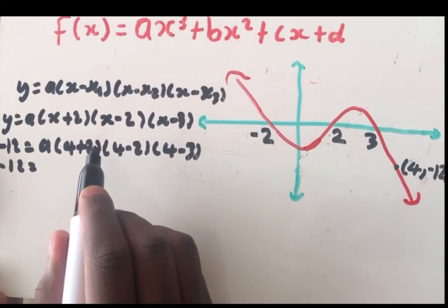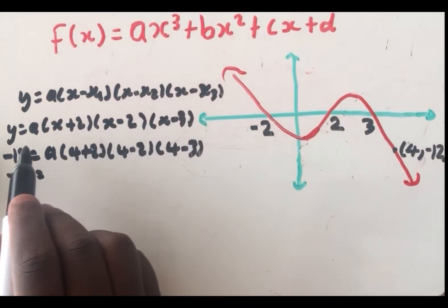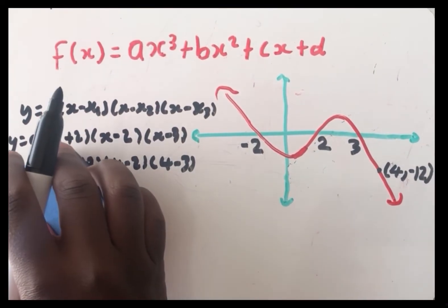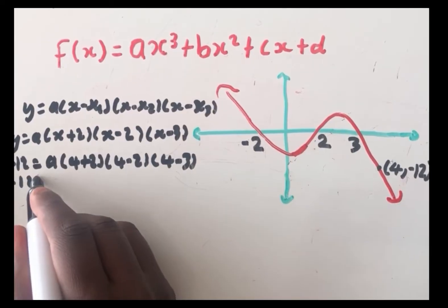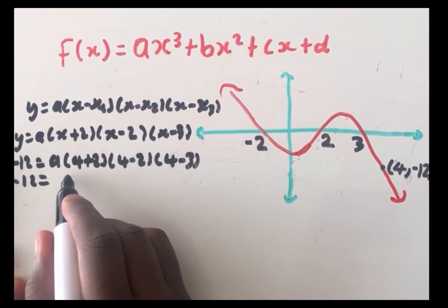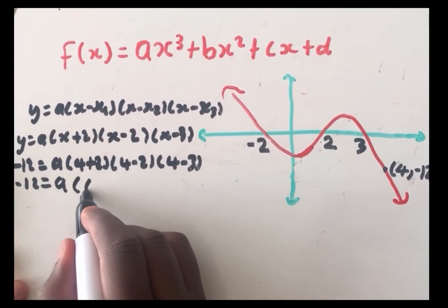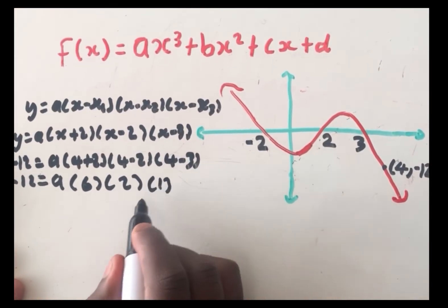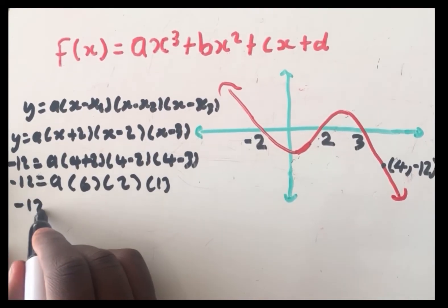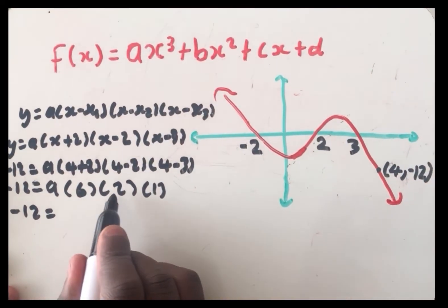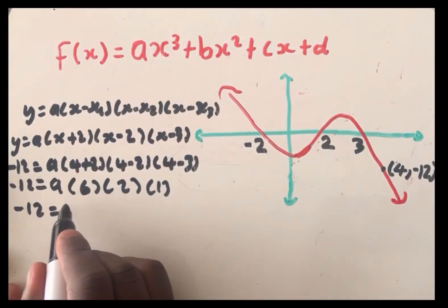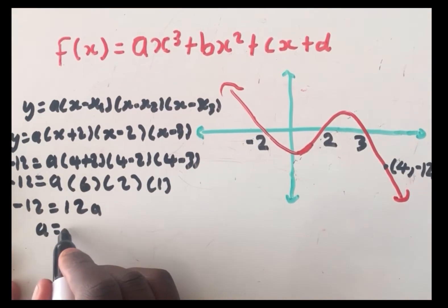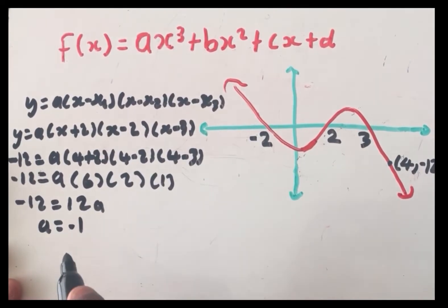We first substitute our x-intercepts, then substitute our extra point, then we are finding a first. Once we find a, we're going to find b, c, and d. So: 4 + 2 = 6, 4 − 2 = 2, 4 − 3 = 1. Multiplying gives 12a. So −12 = 12a, and when we divide both sides, we get a = −1. We found our a.